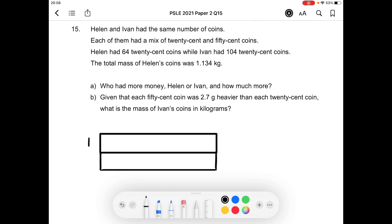This is Helen. This is Ivan. This model represents the number of coins that the two of them had.